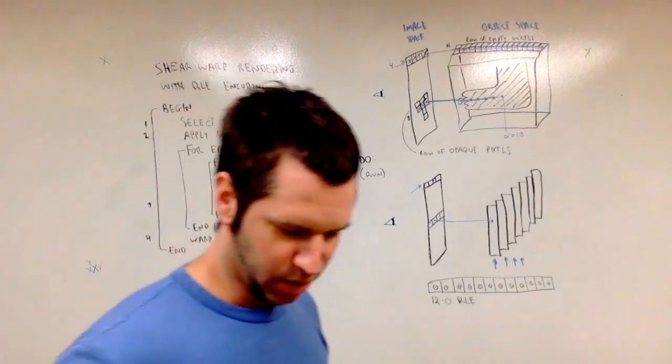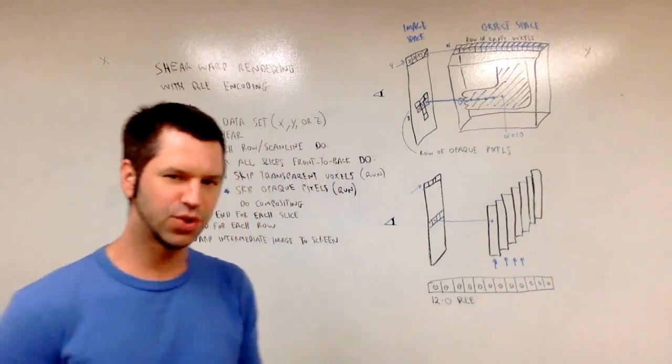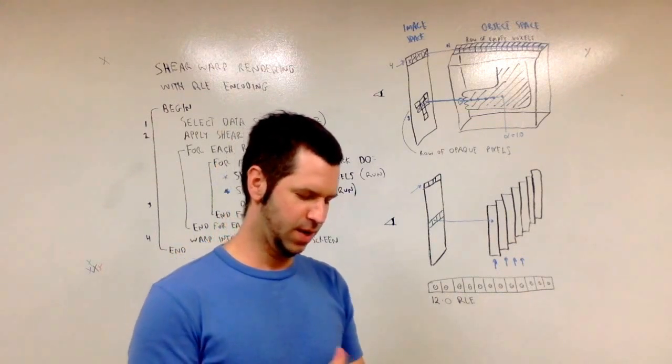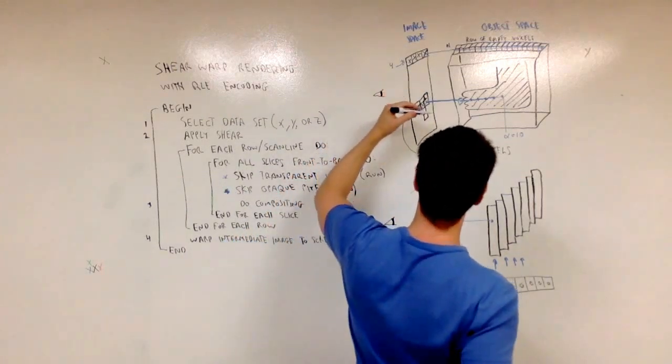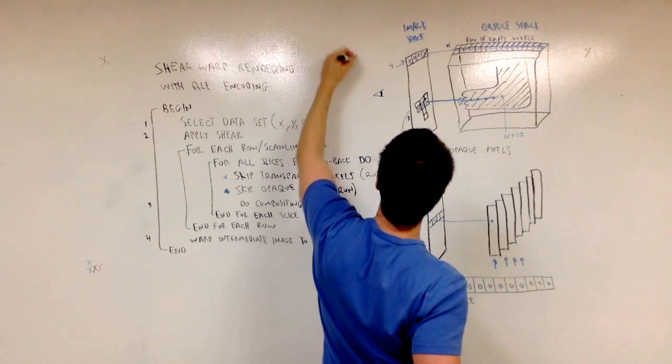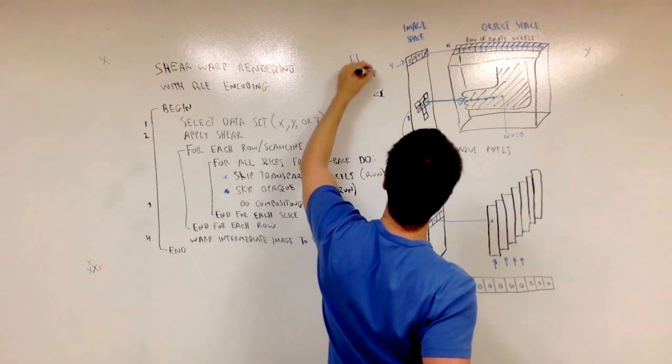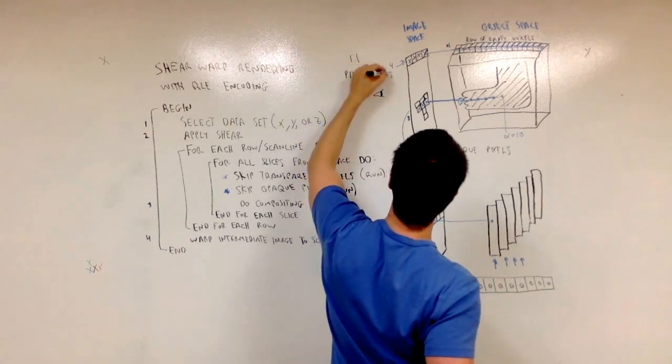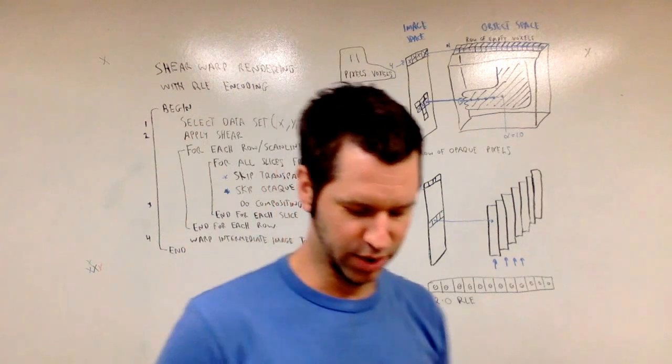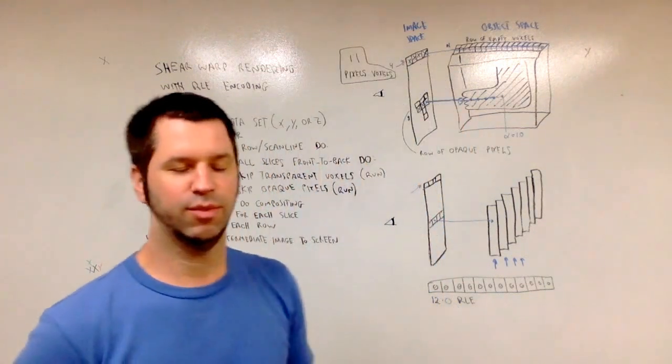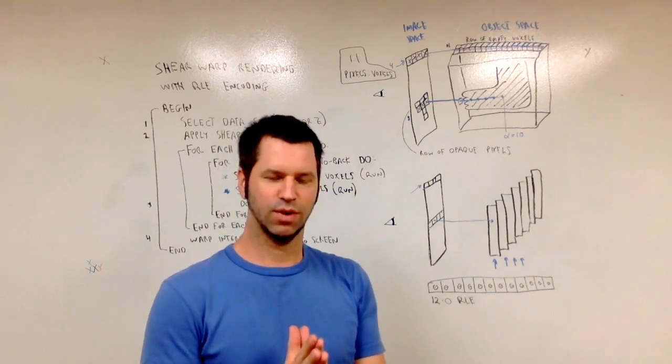And one final thing I don't want to forget is this only works if we have the one to one correspondence between image space and object space. Remember in the previous video, there's a one to one correspondence between pixels in image space and voxels in object space. And without this one to one correspondence, this acceleration technique is going to be very difficult. It's going to be very complicated. So those two acceleration techniques rely on that one to one correspondence.